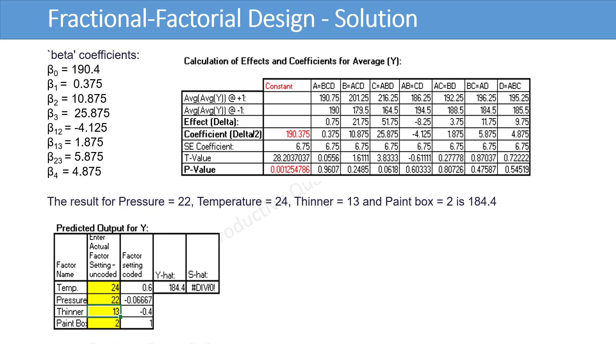The resultant beta coefficients from beta 0 to beta 4 are shown. The result for pressure equal to 22, temperature equal to 24, thinner equal to 13, and paint box equal to 2 is 184.4. Please compare your solution with the exercise solution.